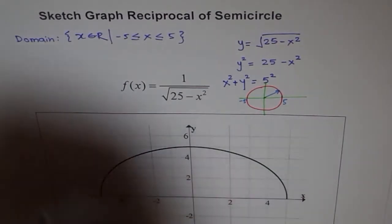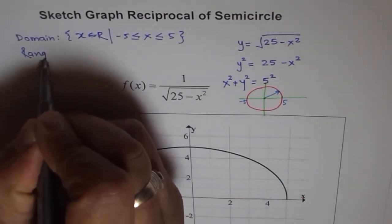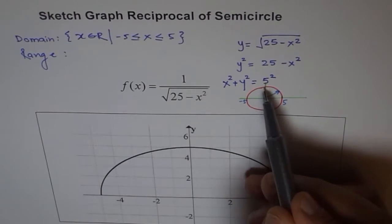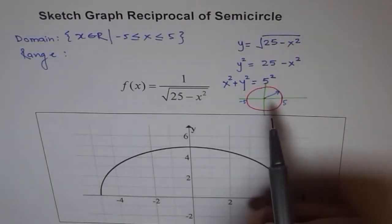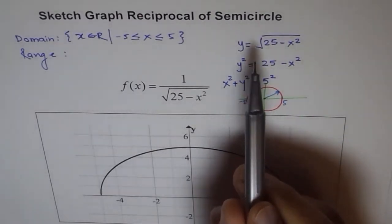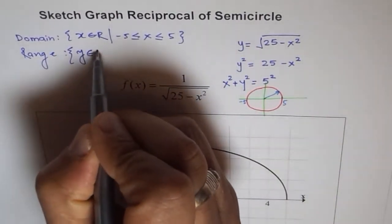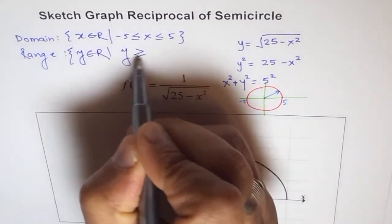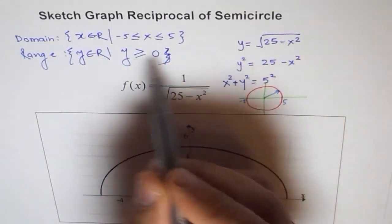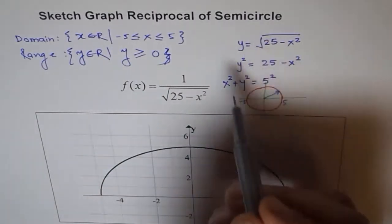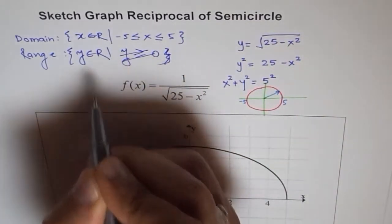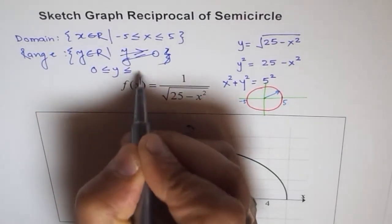And second thing is about the range. So what do you think is the range? Well, the circle has a range from minus 5 to plus 5. But does this square root have a range from minus 5 to plus 5? Square root is always positive. And therefore, the range is that y belongs to real number where y is greater than or equal to 0 but less than or equal to 5. So the y value is actually only from here to here.